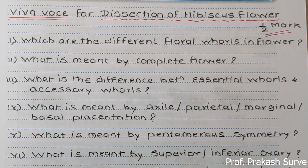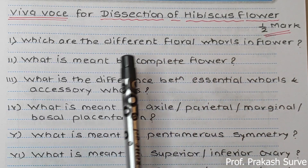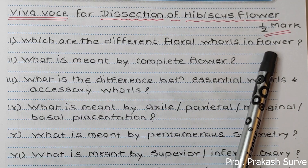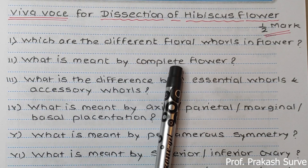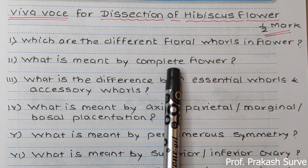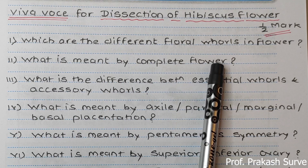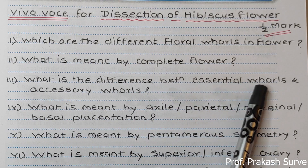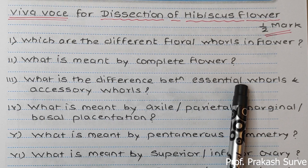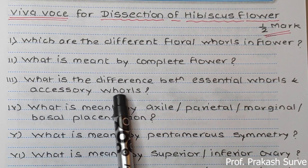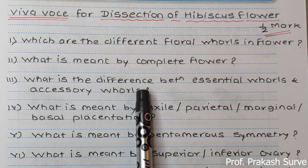For the hibiscus flower dissection viva voce, one or two questions will be asked for half a mark. Questions include: what are the different floral whorls — calyx, corolla, androecium, and gynoecium. What is a complete flower? When a flower shows all four floral whorls it is called a complete flower; otherwise it is incomplete. Essential whorls are androecium and gynoecium, which take part in reproduction; accessory whorls are calyx and corolla, which only help in reproduction.